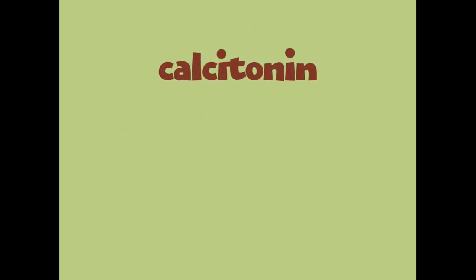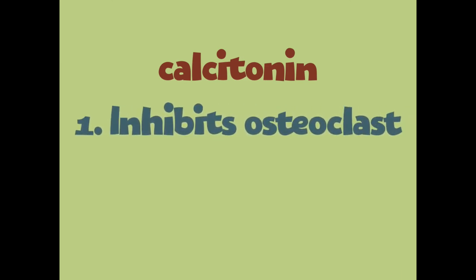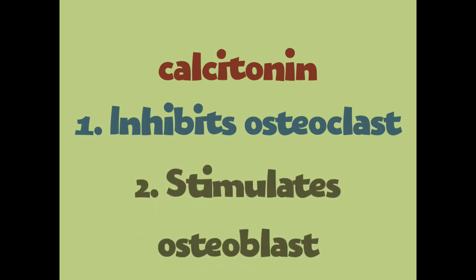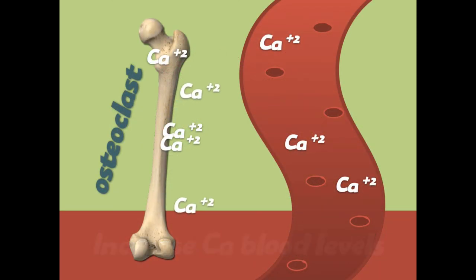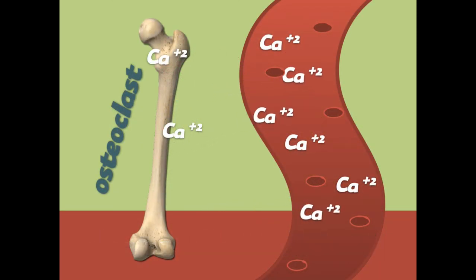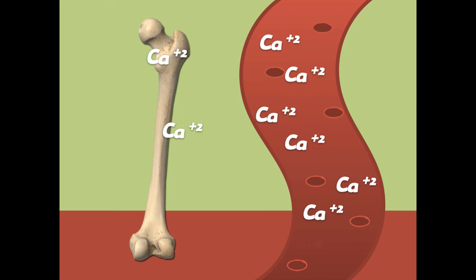Calcitonin's main function is to maintain homeostasis of calcium. It does this in two main ways: number one, it inhibits osteoclasts, and number two, it stimulates osteoblasts. For example, if your bloodstream has too much calcium in it, calcitonin comes into play.